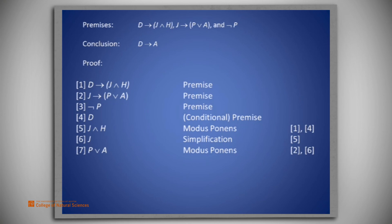Then, with line 3 and the disjunctive syllogism rule, we get A on line 8.